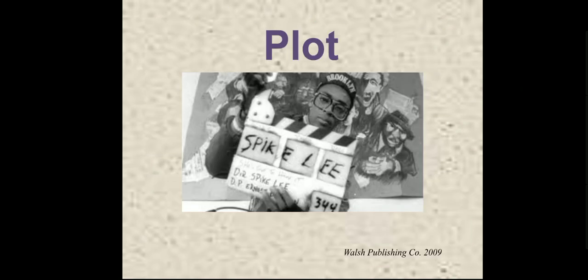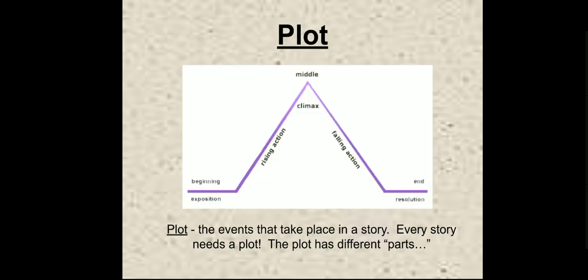Then comes plot. Plot means a series of events — the events that take place in a story. An event means an activity or action which is happening.